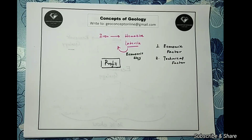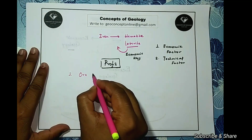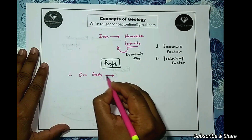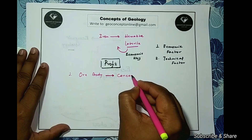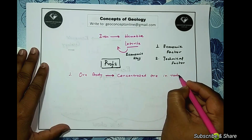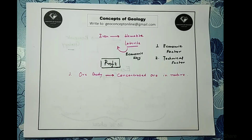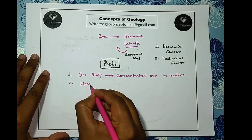To obtain an ore we need to mine it. Where we find a concentration of ore in nature, we call it an ore body — a concentrated occurrence of ore in nature. In nature, most minerals occur intergrown in rock; ores are also minerals and similarly intergrown. When we mine, we normally excavate the rock that is enriched in the ore mineral — that rock is called the host rock.